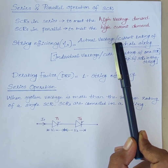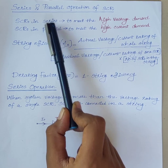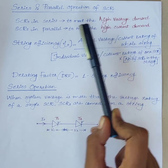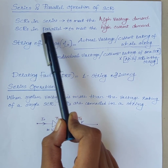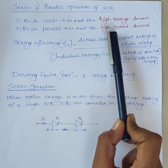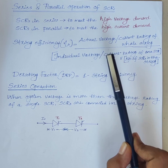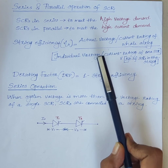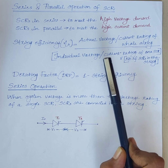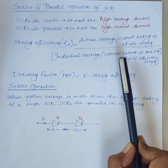In such cases, SCRs are connected in series to meet high voltage demand, and SCRs are connected in parallel to meet high current demand. For series and parallel connected SCRs, it should be ensured that each SCR rating is fully utilized and the system operation is satisfactory.